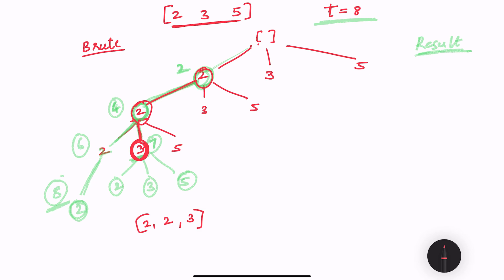If I go a different way, so from this 2 let's say I'm going to this 3, so my array will have 2, 3. From this 2 I can go to 2, 3, or 5.